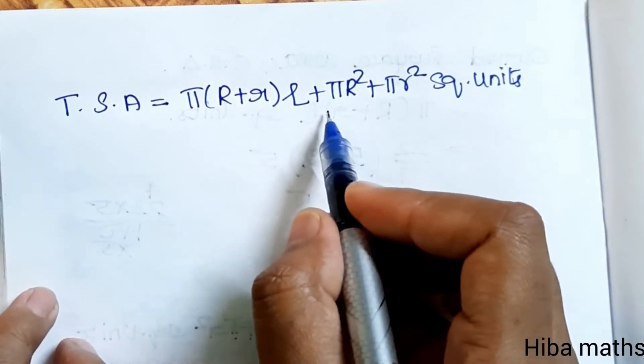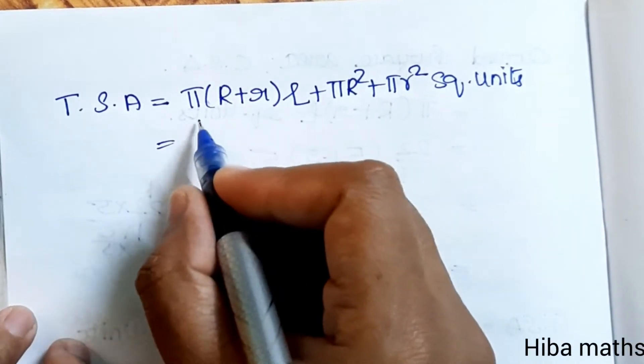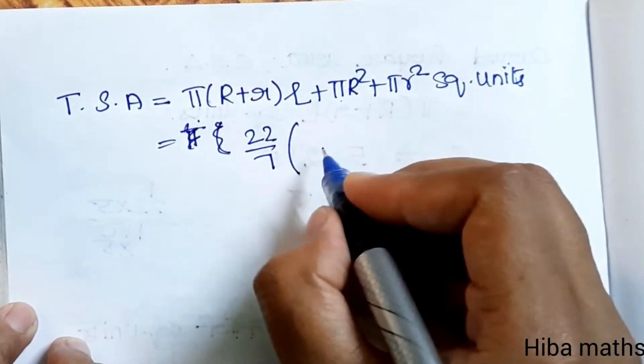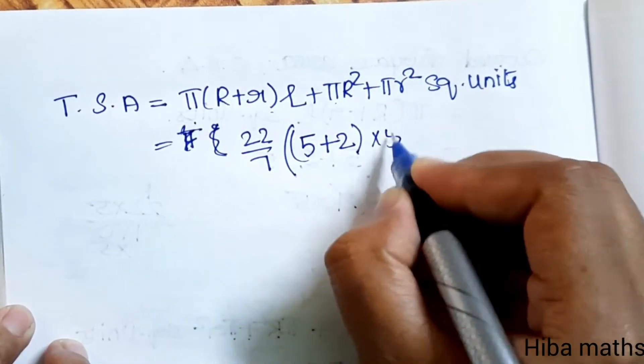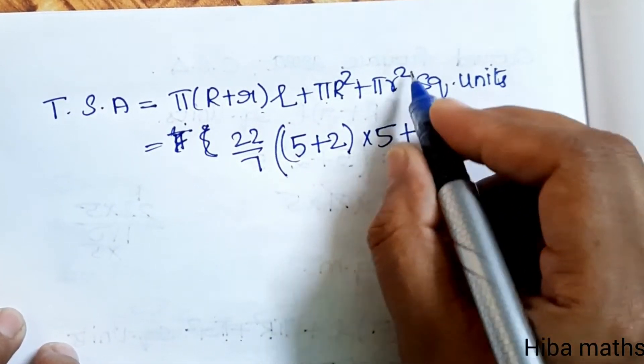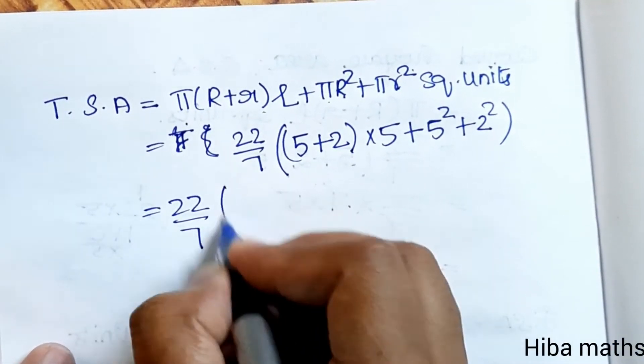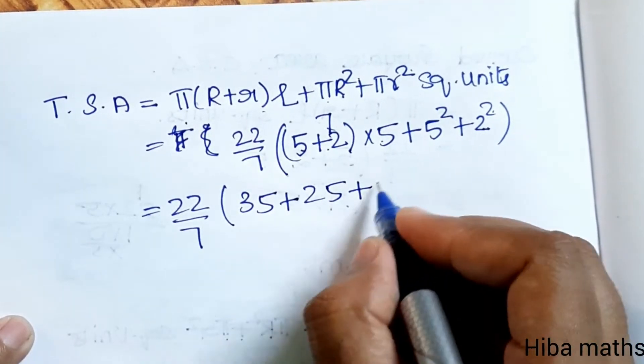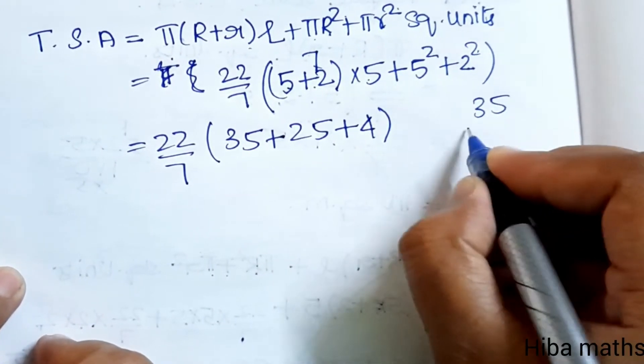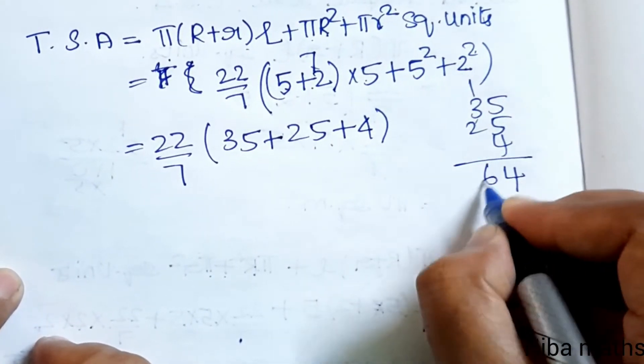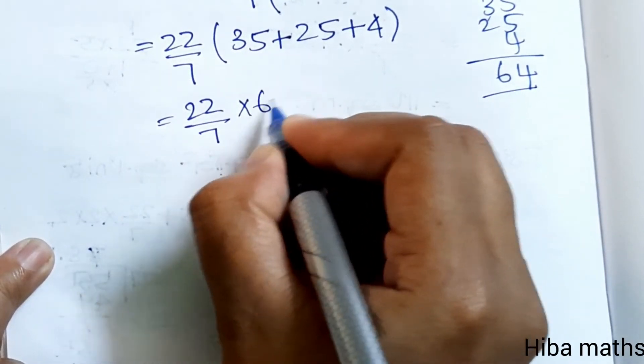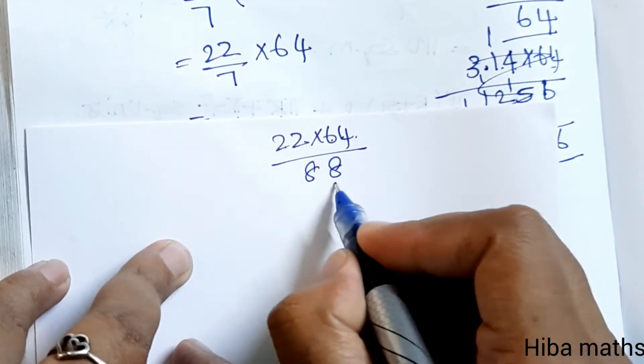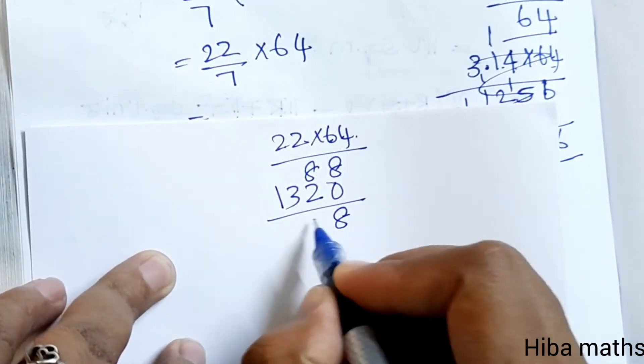TSA formula: pi times R plus r times L plus pi R square plus pi r square. Equals 22 by 7 into 5 plus 2 is 7, times 5 is 35, plus R square is 25, plus r square is 4.